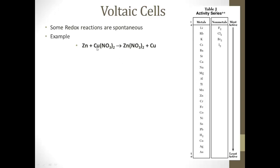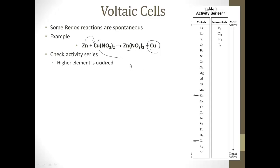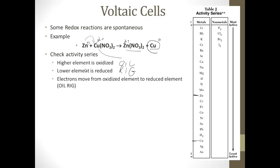So if we look at an example: zinc plus copper nitrate — the zinc will replace the copper, ending up with zinc nitrate, and the copper will get kicked out. Since zinc is higher on the activity series, it replaces copper, which is lower. The zinc is oxidized — oxidation is losing — so zinc goes from Zn0 to Zn2+, losing two electrons. The lower element, copper, is reduced — reduction is gaining — copper went from Cu2+ to Cu0 because it gained two electrons. So the electrons move from the oxidized element, zinc, to the reduced element, copper.